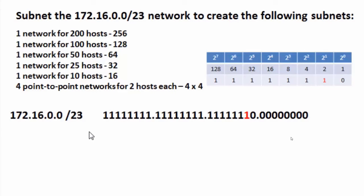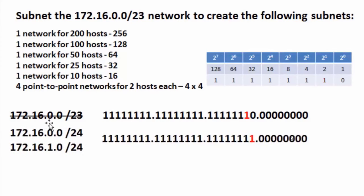Working from largest to smallest, the first step is to create a network for 256 hosts to satisfy the 200-host requirement. I subdivide the single /23 network of 512 hosts into two smaller subnets of 256 hosts each. Instead of 172.16.0.0/23, I change the subnet mask to /24. This creates two networks — 172.16.0.0 and 172.16.1.0 — each with 256 addresses, or 8 host bits.